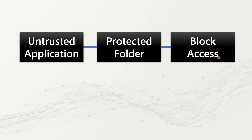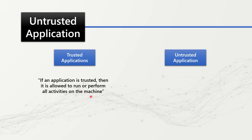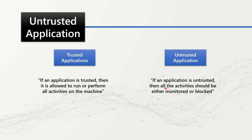We typically differentiate applications by two categories: trusted and untrusted, or sanctioned and unsanctioned applications. If an application is trusted, it is allowed to run and perform all activities on the machine. Whereas if the application is untrusted, all application activities should either be monitored or blocked. This is a very common approach to identify whether an application is malicious or not.